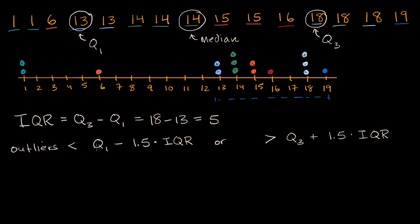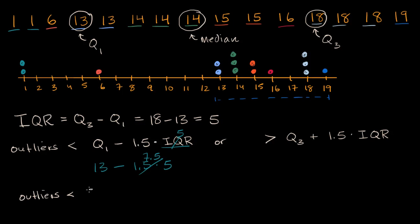So let's think about what these numbers are. Q1 is 13, so this is going to be 13 minus 1.5 times our interquartile range. Our interquartile range is five, so it's 1.5 times five, which is 7.5. 13 minus 7.5 is 5.5. So outliers would be less than 5.5.